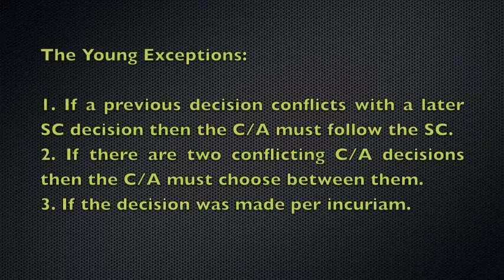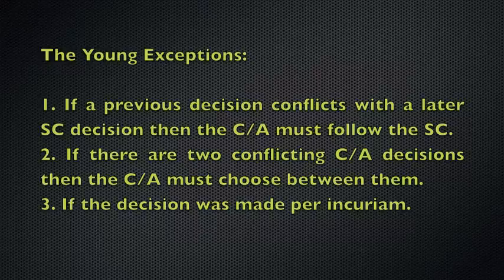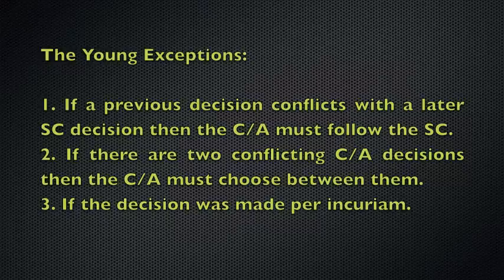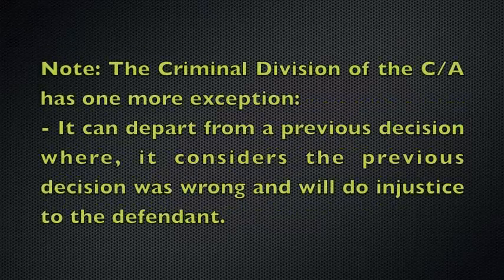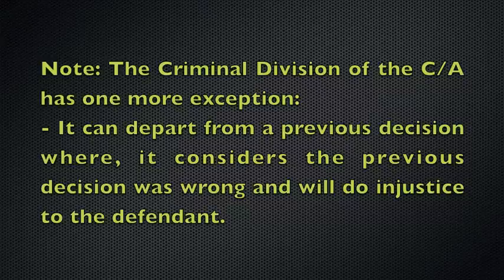Those three exceptions — also known as the Young exceptions — are: firstly, if a previous decision conflicts with a later Supreme Court decision, then the Court of Appeal must follow the Supreme Court decision and abandon its own. Secondly, if there are two conflicting Court of Appeal decisions, then the Court of Appeal must choose between them. Thirdly, if the decision was made per incuriam, i.e. the decision was made in error. Additionally, the Criminal Division of the Court of Appeal has one more exception: it can depart from a previous decision where it considers that decision was wrong and it will do injustice to the defendant.